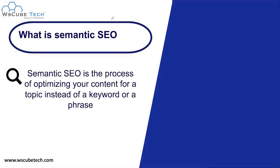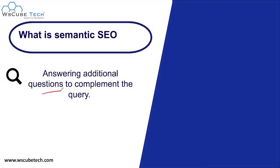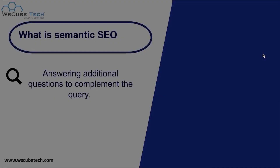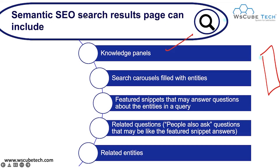So now the question is, what is semantic SEO? Semantic SEO is the process of optimizing your content for a topic instead of a keyword or a phrase. Here we work on a particular topic and we use the best possible semantic words in the content, answering additional questions to complement the query. The semantic SEO search result page can include a knowledge panel — when you search about some person or personality on Google, you can find a Wikipedia-style sidebar. This is known as the knowledge panel.